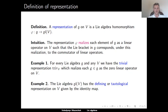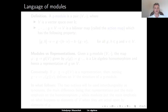The second, also fairly easy example, is that the Lie algebra gl(v) itself has a defining representation on v, which is given by the identity map. The identity map is obviously a homomorphism of Lie algebras. This defining representation is sometimes also called the tautological representation of gl(v) on v.